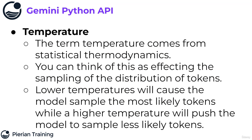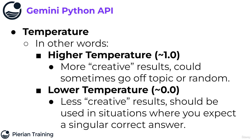Let's begin with temperature. The term temperature actually comes from statistical thermodynamics. Think of it as affecting the sampling of the distribution of tokens. Lower temperatures cause the model to sample the most likely tokens, while higher temperatures push the model to sample less likely tokens. A higher temperature, closer to the max value of 1, gives you more creative results — though going too high can cause the model to go off-topic or produce random-seeming text. Lower temperatures closer to zero give less creative results, suited for situations where you expect a singular correct answer, like asking for the capital of France.